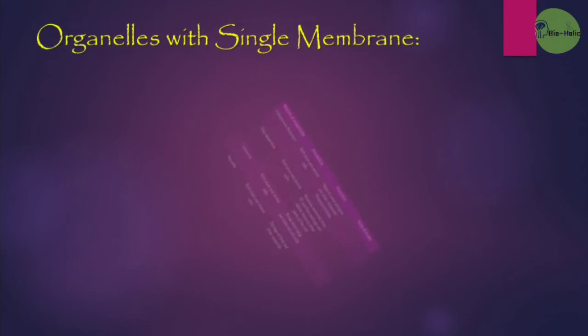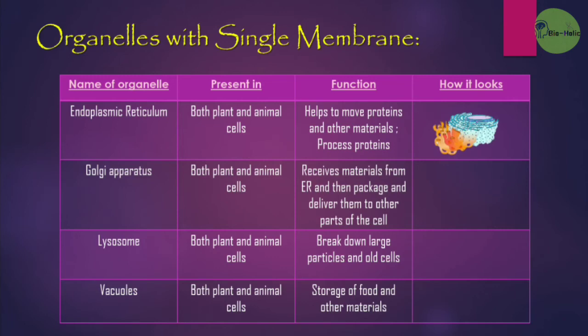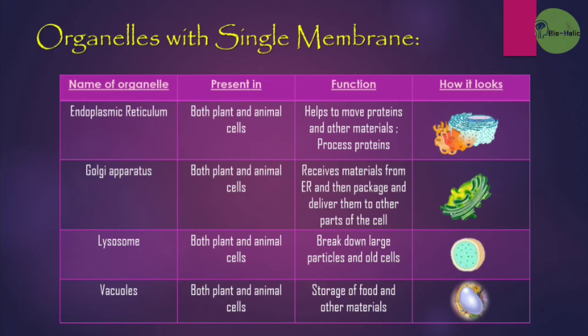Now the organelles with single membrane: endoplasmic reticulum, Golgi apparatus, lysosome, and vacuoles. The endoplasmic reticulum is present in both plant and animal cells; it helps move proteins and other materials and also processes proteins. The Golgi apparatus is also present in both plant and animal cells; it receives materials from the endoplasmic reticulum, then packages and delivers them to other parts of the cell. The lysosome is present in both plant and animal cells and breaks down large particles and old cells by phagocytosis. The vacuoles are present in both plant and animal cells and are important for storage of food and other materials.